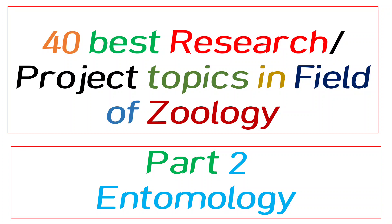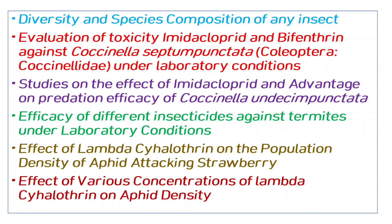The first topic is diversity and species composition of any insect. You can check in any locality — there is a specific insect, check how many species are in the field. The species composition of one place, for example the number of beetle species, represents the diversity of that location. You can study them.